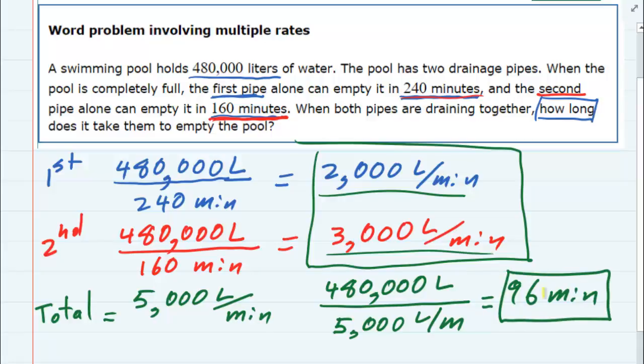So does that answer make sense? If one pipe working alone takes 240 minutes and the other one takes 160 minutes, if we put them together, it should be able to drain quicker. And in this case, it does. We've shown that it drains in 96 minutes.